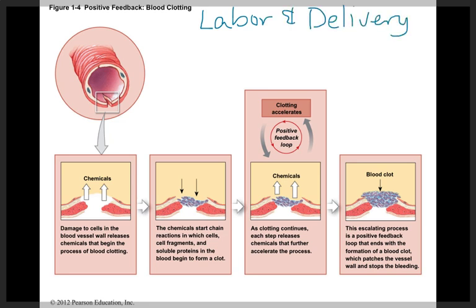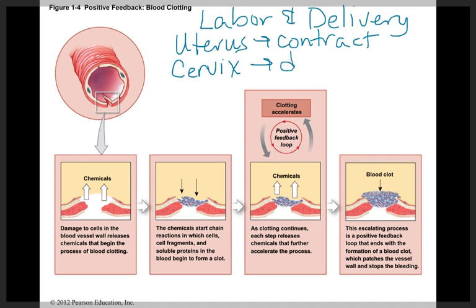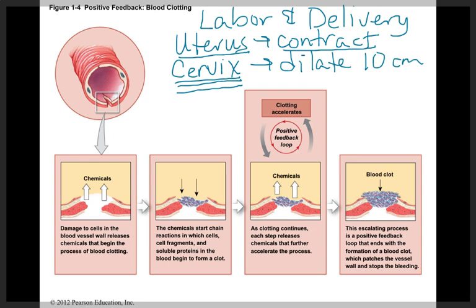Another example of positive feedback is labor and delivery, involving the uterus and the cervix — the opening of the uterus. The uterus contracts to push the baby out, and the cervix must dilate wide enough for the baby. Chemicals released cause the cervix to dilate more, releasing more chemicals, continuing until about 10 centimeters of dilation. Similarly, a uterine contraction caused by hormones leads to more hormones being released, causing greater contractions, and so on, until contractions are strong enough and close enough together to deliver the baby.